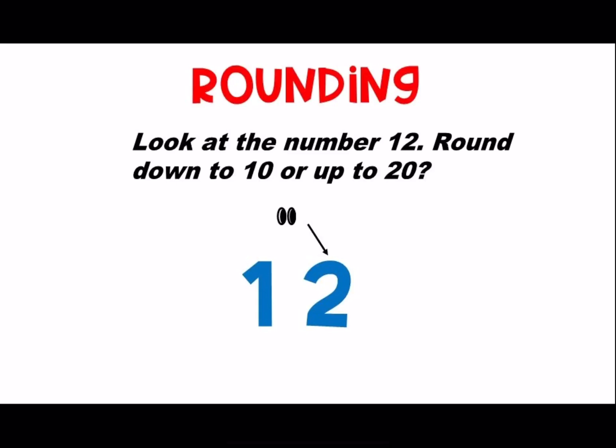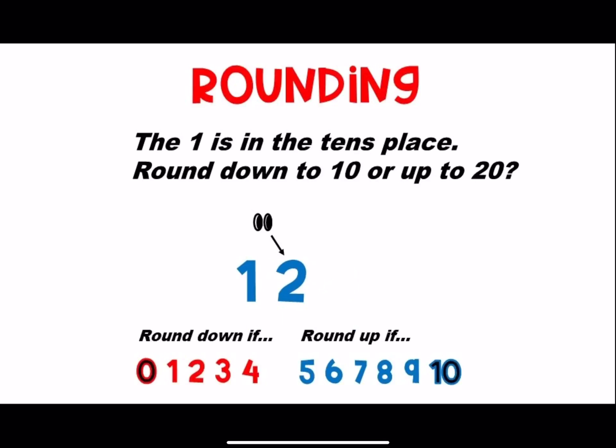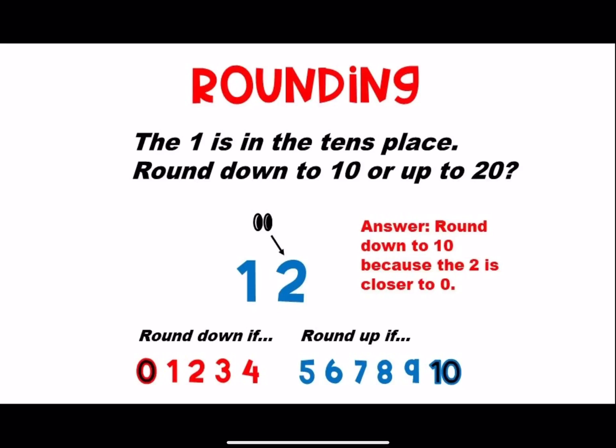Look at the number 12. Round down to ten or up to 20. You look at the number to the right of the tens place — that's a two. Remember, we round down if it's less than five. Will we round down to ten or up to 20? Answer: round down to ten because the two is closer to the zero.